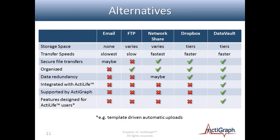Some alternatives to Data Vault that are out there: our customers tend to use one of the first three schemas for file sharing. One of the most common is email, which doesn't provide any storage space, isn't organized, may limit attachment sizes — so you might have trouble sending large GT3X files — and transfer speeds are marginal at best. There's usually no data redundancy with email and FTP, and neither integrates with ActiLife or is supported by the ActiGraph staff.